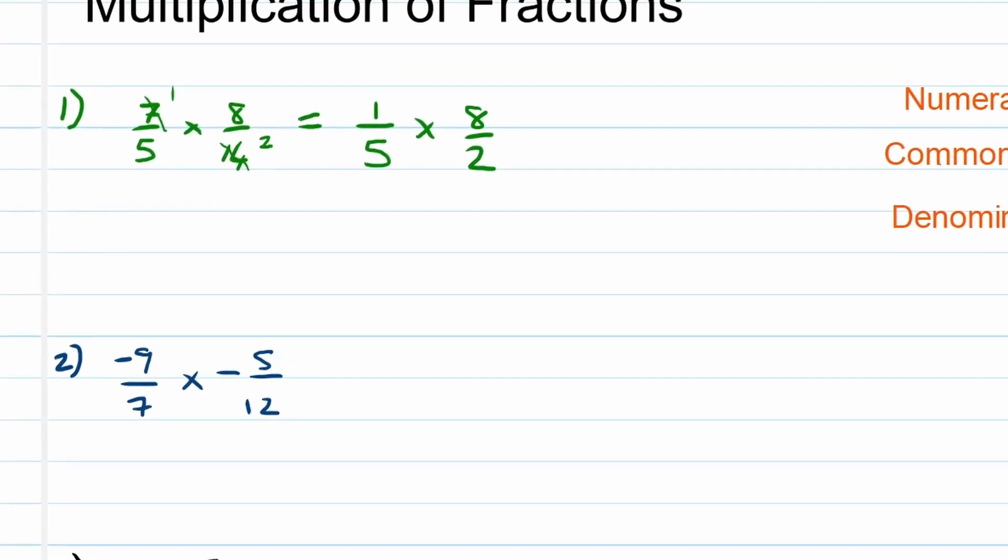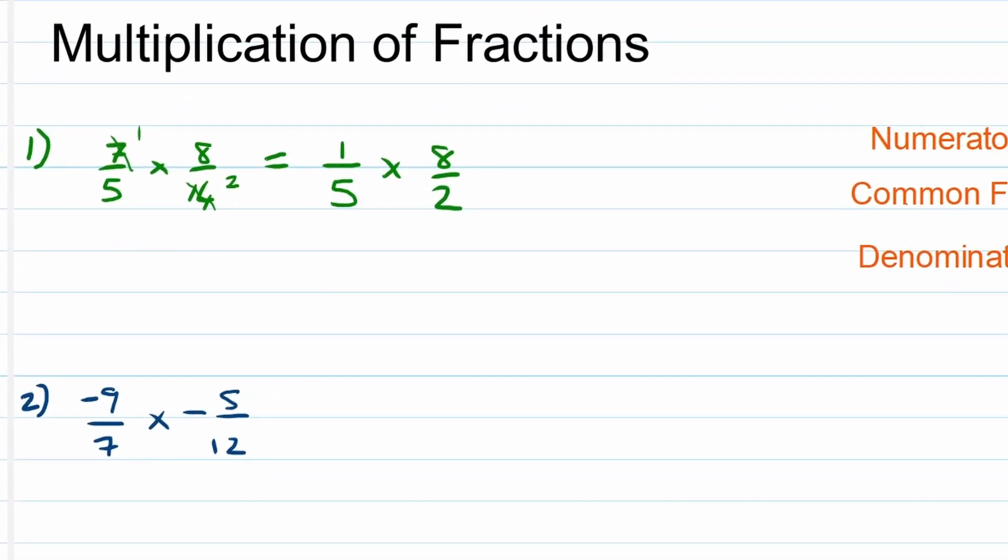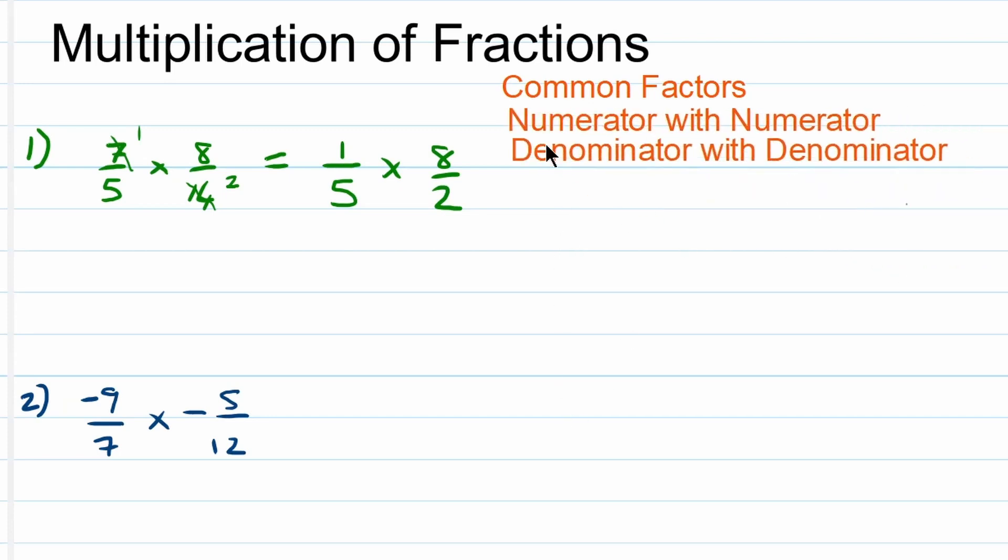Now since we don't have any other common factors, we are going to multiply the numerators with numerators and then denominators with denominators. So in doing so, 1 times 8 becomes 8. That's this step right there. And then over 5 times 2 which becomes 10.